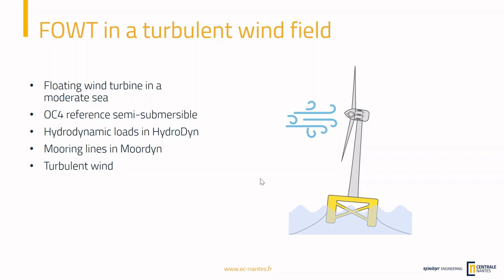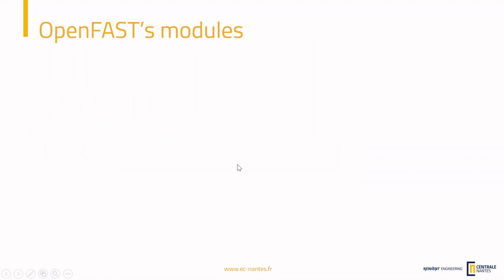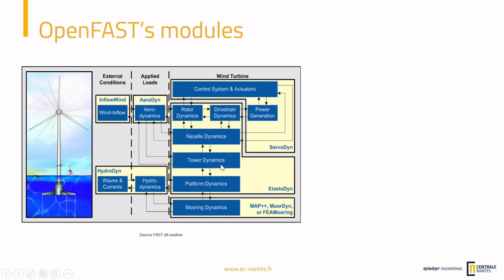We will need additional modules for our OpenFast software. So far we've used ElastoDyn for the structure, AeroDyn for the aerodynamic loads and InflowWind to model the incoming wind, and ServoDyn for the generator and the control system. Today we want to add some hydrodynamic loads to the platform, so we will use HydroDyn for this. HydroDyn will take care of both the waves and the hydrodynamic loads, while it splits into separate modules like AeroDyn and InflowWind. In AeroDyn it takes care of both.